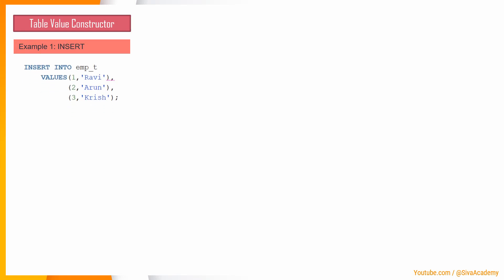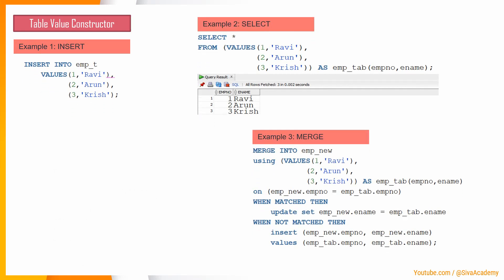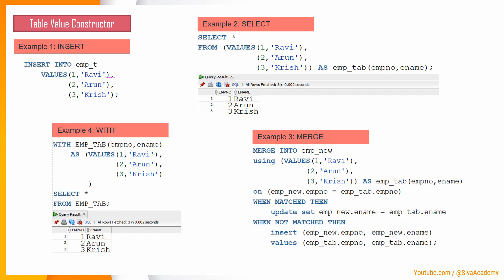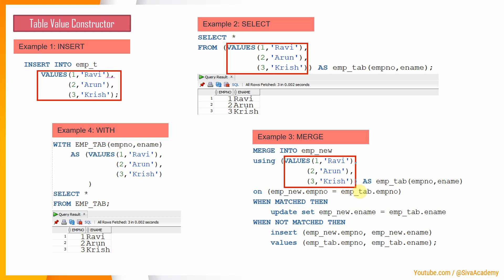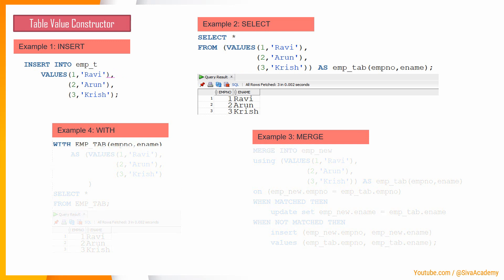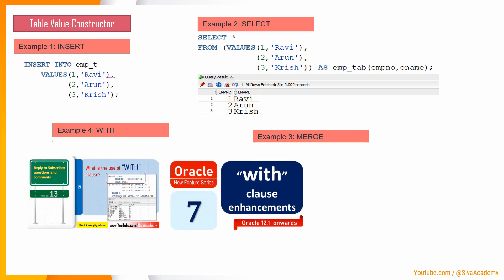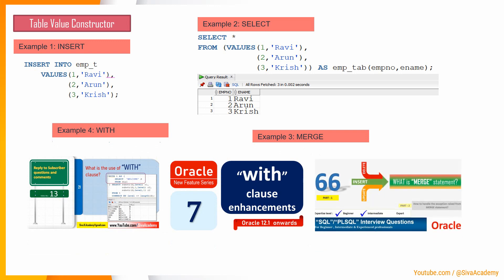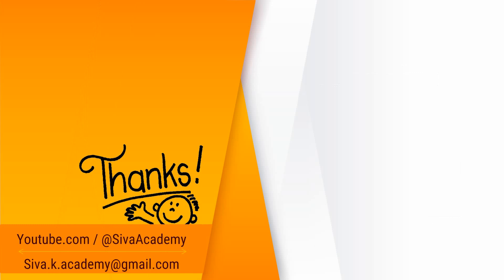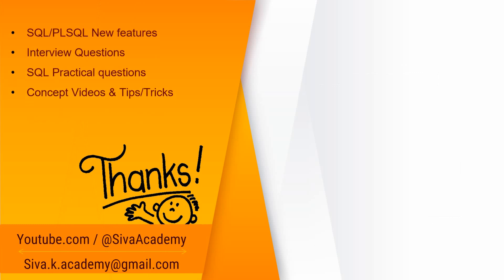The key learning across all these examples — INSERT, SELECT, MERGE, and WITH clause — is how to use this VALUES clause. In INSERT, it provides data for multiple rows; the same applies for SELECT and MERGE. If you'd like to understand more about the WITH clause and MERGE, I'd suggest watching the related videos — the first two are for WITH clause and the last one is for MERGE. If you have learned something new, please like this video, subscribe, and stay tuned for new feature videos, interview questions, SQL practical questions, and concept videos. Thanks a lot for watching.